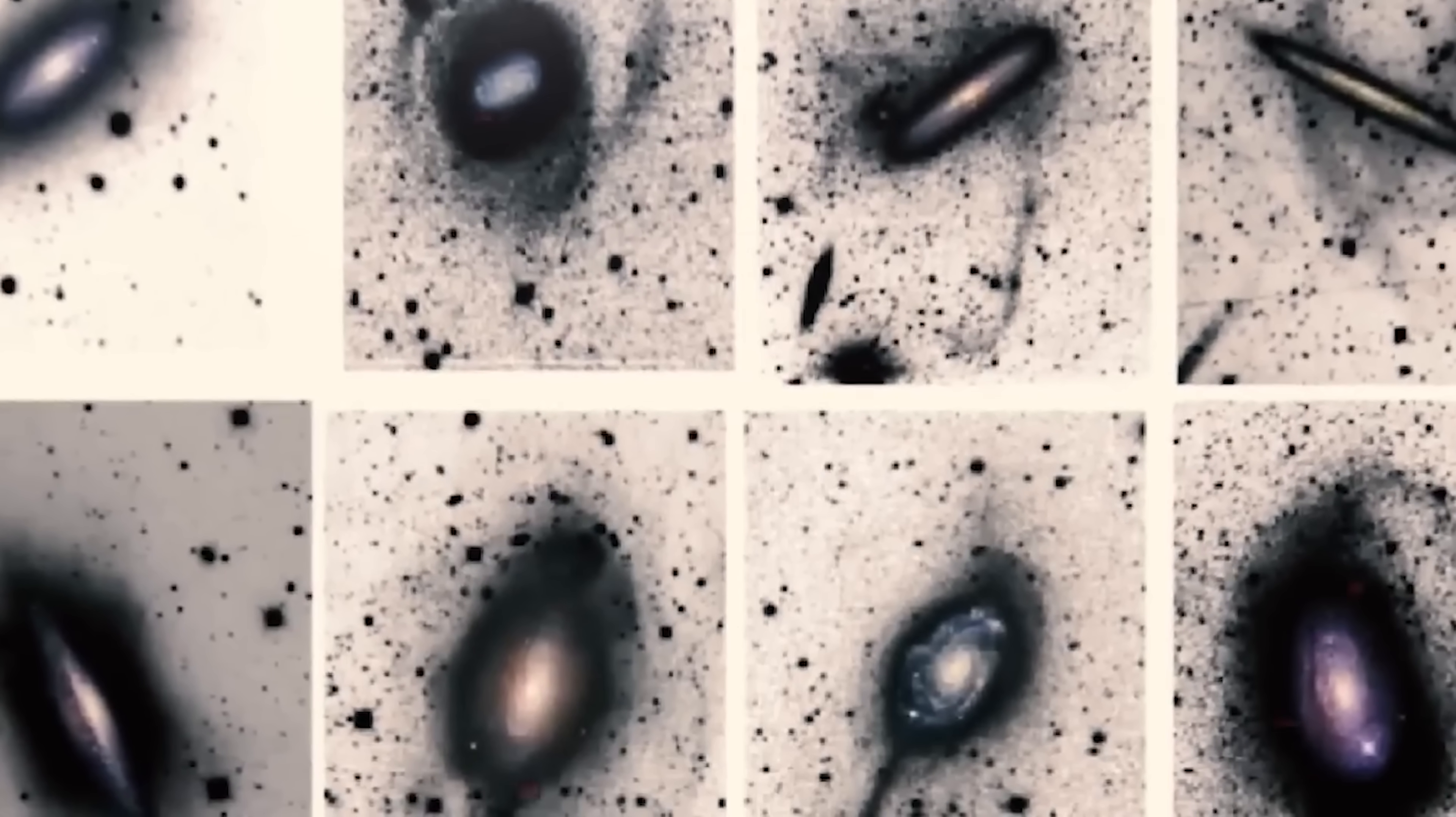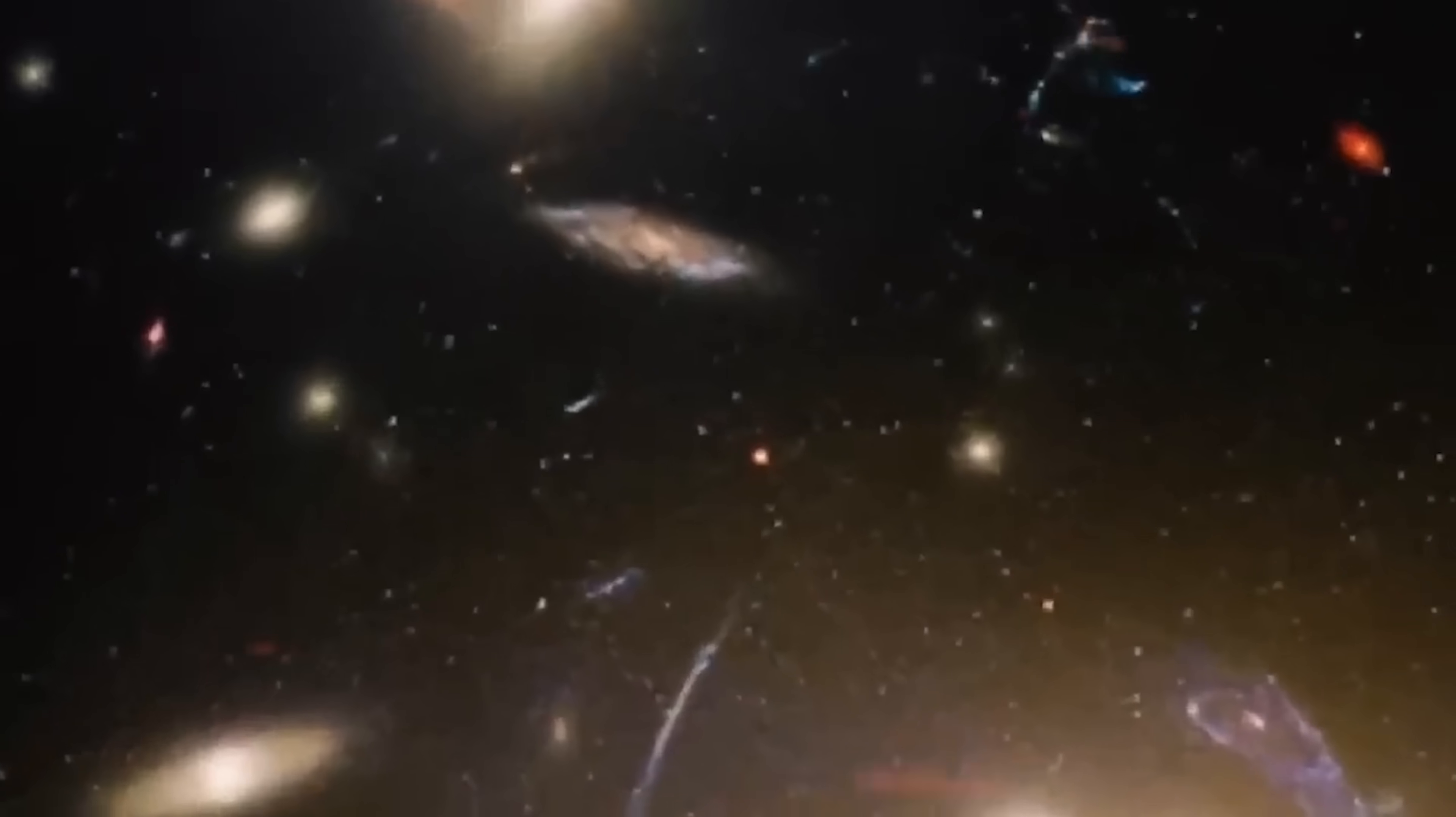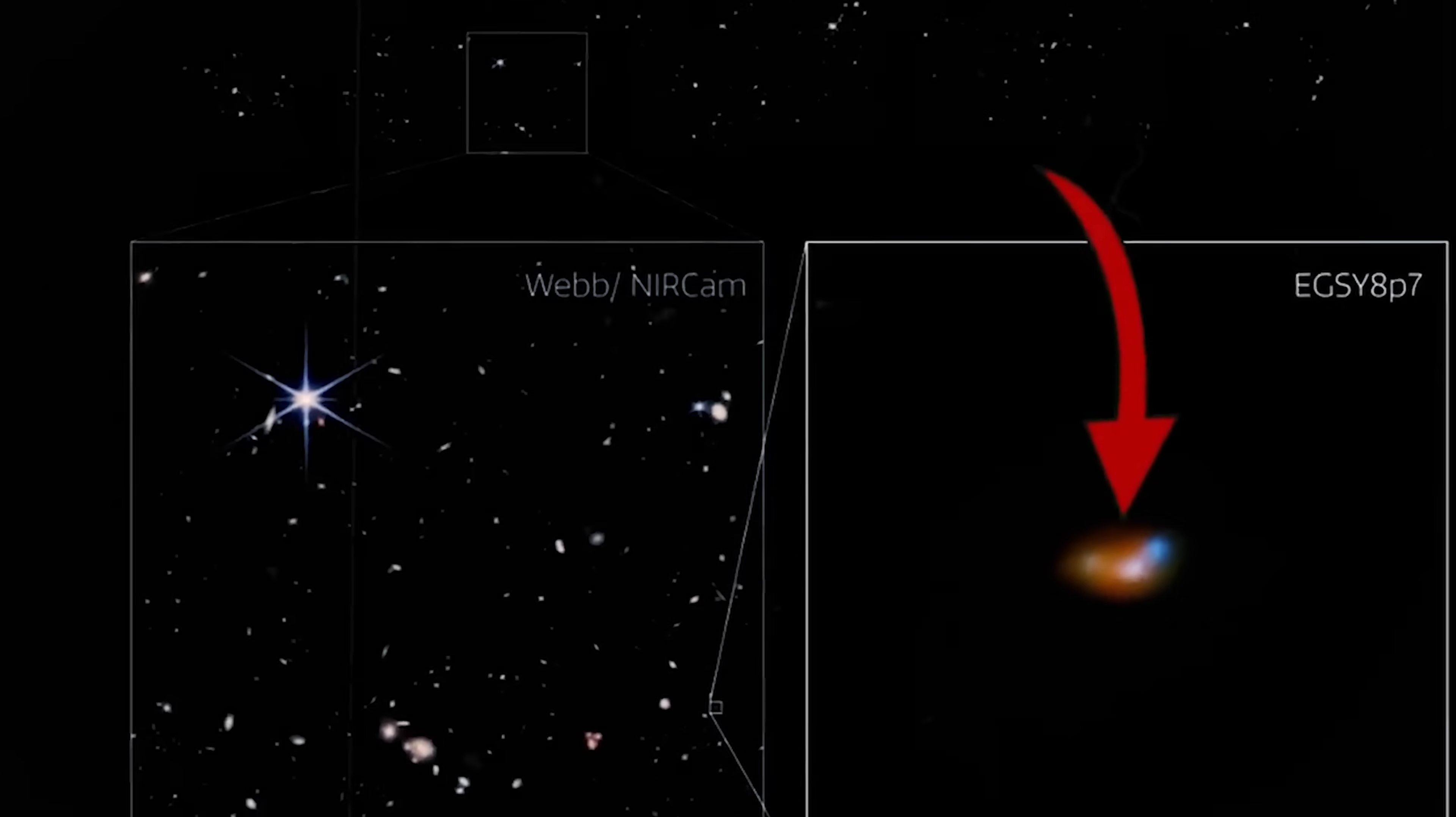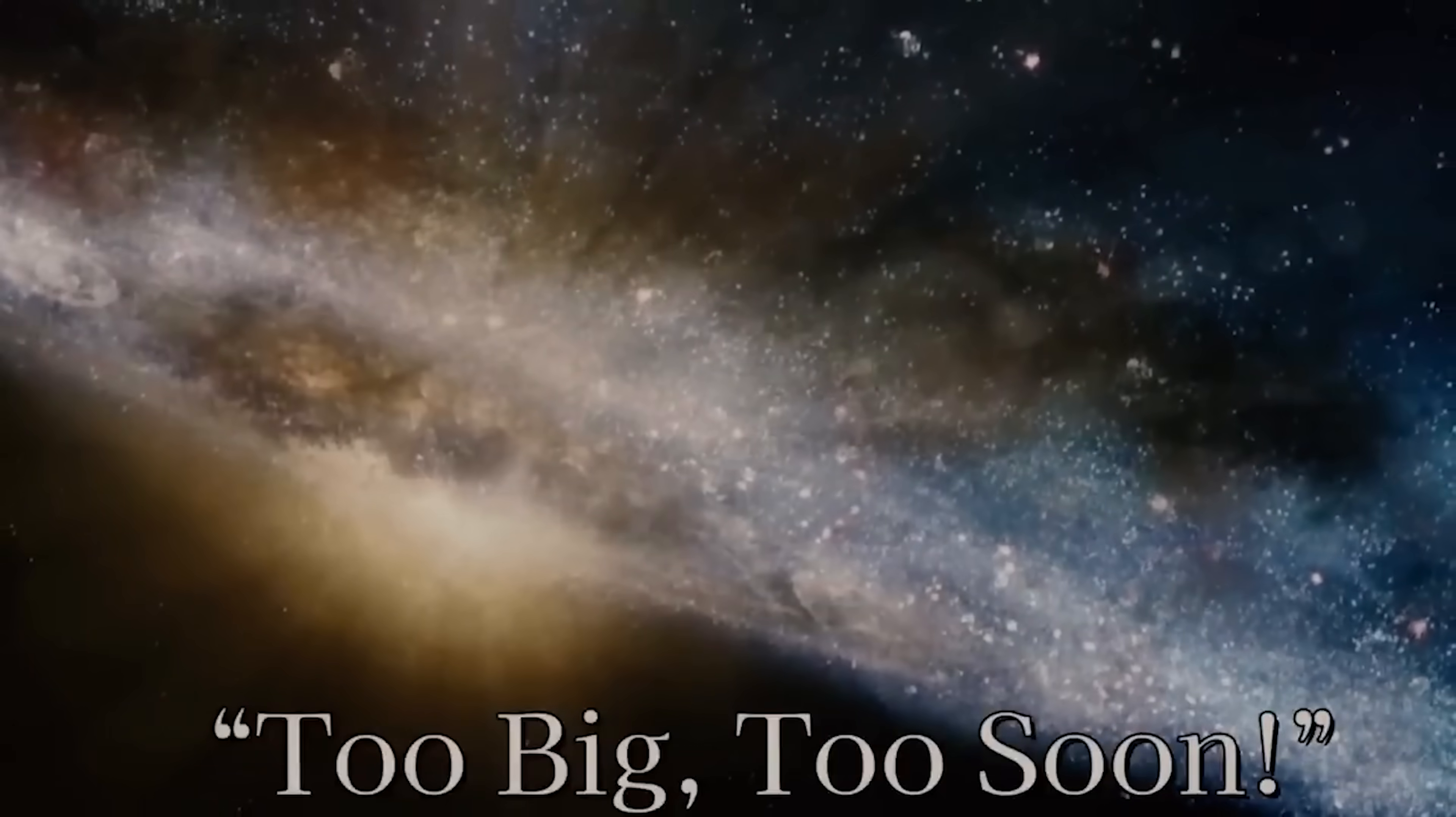For galaxies to shine that brightly, they would have needed to balloon to extraordinary sizes almost instantly. Brightness usually means mass, yet these objects appeared at an era when there simply shouldn't have been enough time for such growth. How could such giants assemble in the cosmic equivalent of a blink? And what kind of physics allows them to glow with an intensity they shouldn't even be capable of? The scientific community gave them a nickname that captured the collective frustration: too big, too soon.